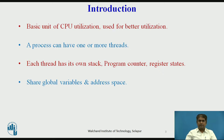On the other hand, in an operating system with a threads facility, the basic unit of CPU utilization is a thread. In such an operating system, a process consists of an address space and one or more threads of control. Each thread of a process has its own program counter, its own register state, and its own stack. But all threads of a process share the same address space.